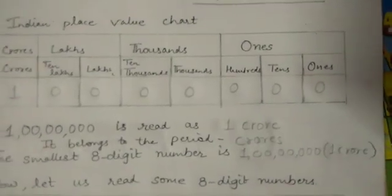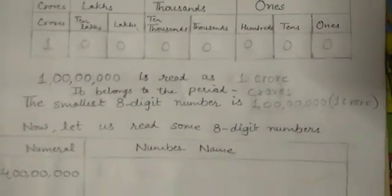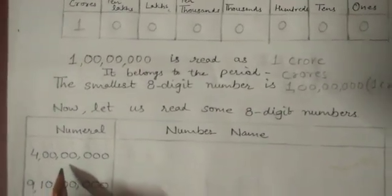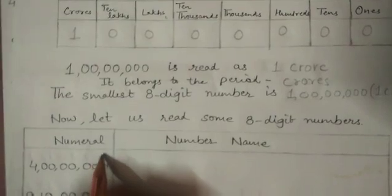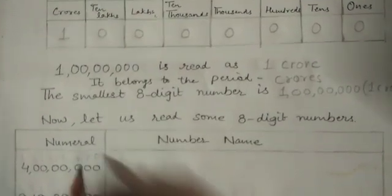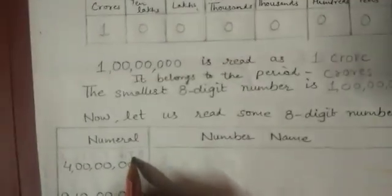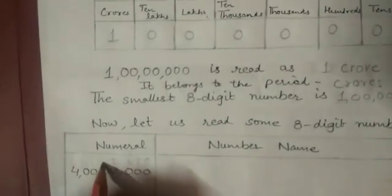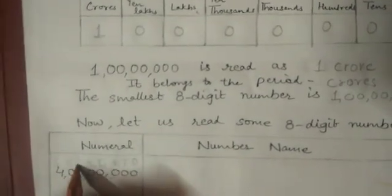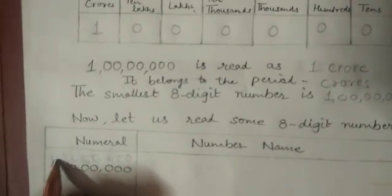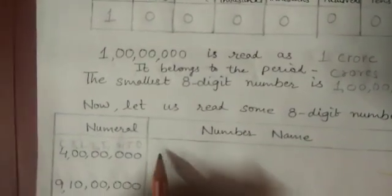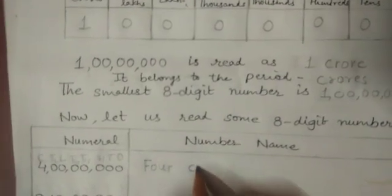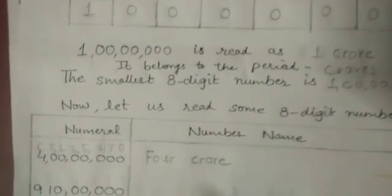Now let us try to read some 8-digit numbers. First, mark the places: ones, tens, hundreds, thousands, ten thousands, lakhs, ten lakhs, crores. The number will be four crore.